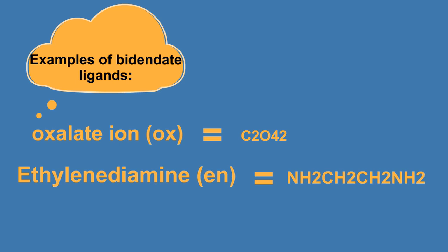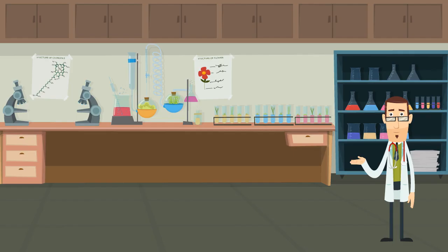3. Examples of bidentate ligands. Oxalate ion, ethylenediamine, 2,2-bipyridine.